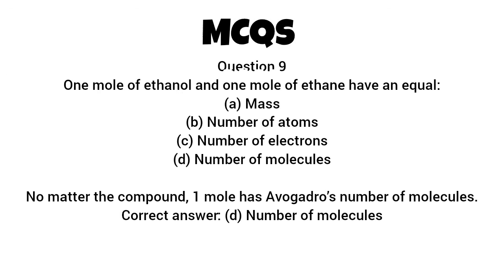Question 9. One mole of ethanol and one mole of ethane have an equal. A. Mass. B. Number of atoms. C. Number of electrons. D. Number of molecules. No matter the compound, one mole has Avogadro's number of molecules. Correct answer D. Number of molecules.